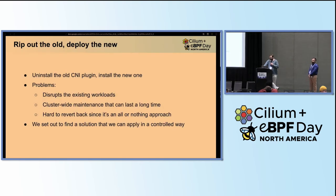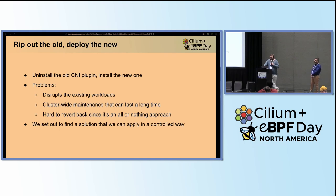You could just uninstall the CNI plugin and install the new one. Obviously this has disruption to your existing environments. Your maintenance is cluster-wide and can potentially last a fairly long time depending on if you have any failures. And it's relatively difficult to revert back — it's kind of an all-or-nothing approach. So when we had discarded all of these options, we set out to find a solution that we could apply in a more controlled way. I'll pass it off to Mo to talk about those.